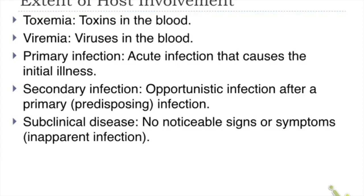Most secondary infections are opportunistic infections following a primary or predisposing condition. For example, if your primary infection is HIV and your immune system becomes weak, organisms like Pneumocystis carinii and Candida albicans take advantage of the weakened host — these are secondary opportunistic infections. Subclinical disease means there are no noticeable signs or symptoms; people may appear normal but be infected — as often seen in chronic carriers of Hepatitis B or C.